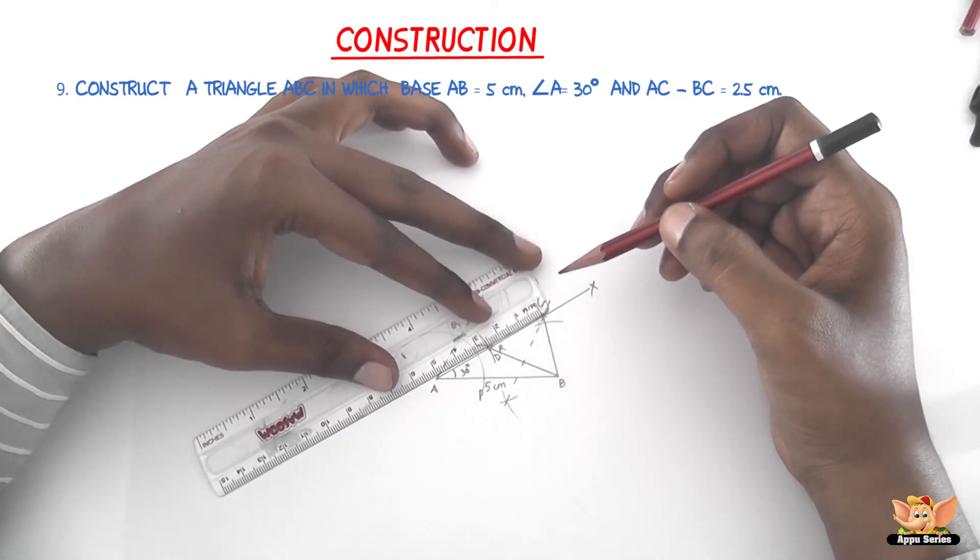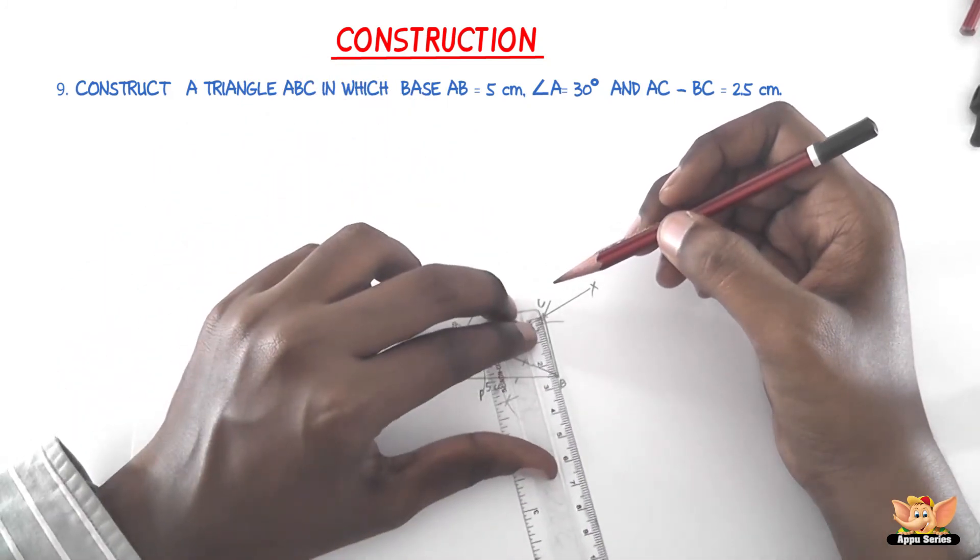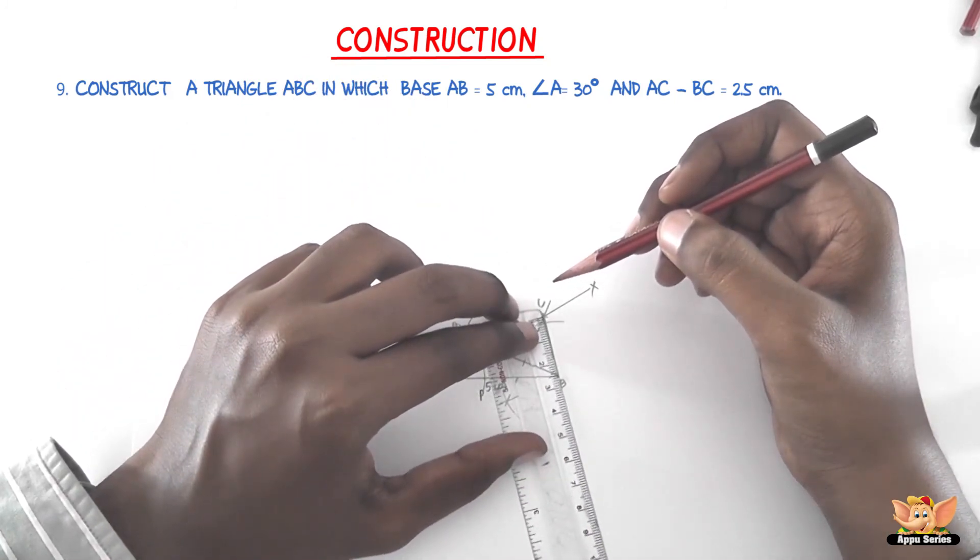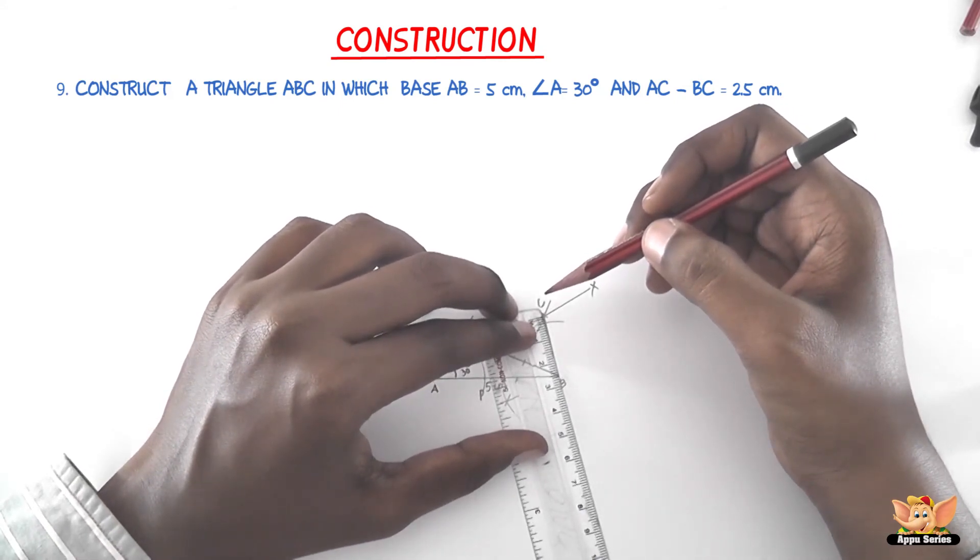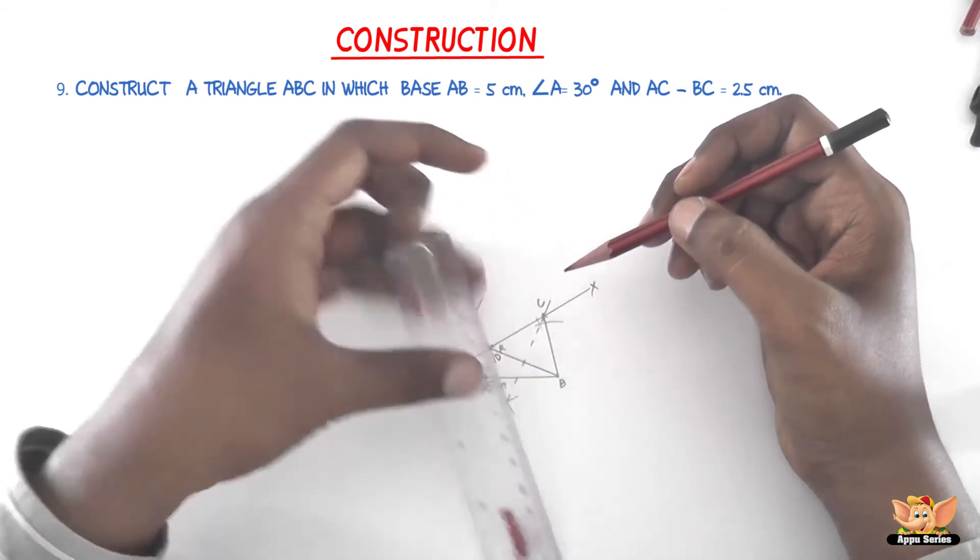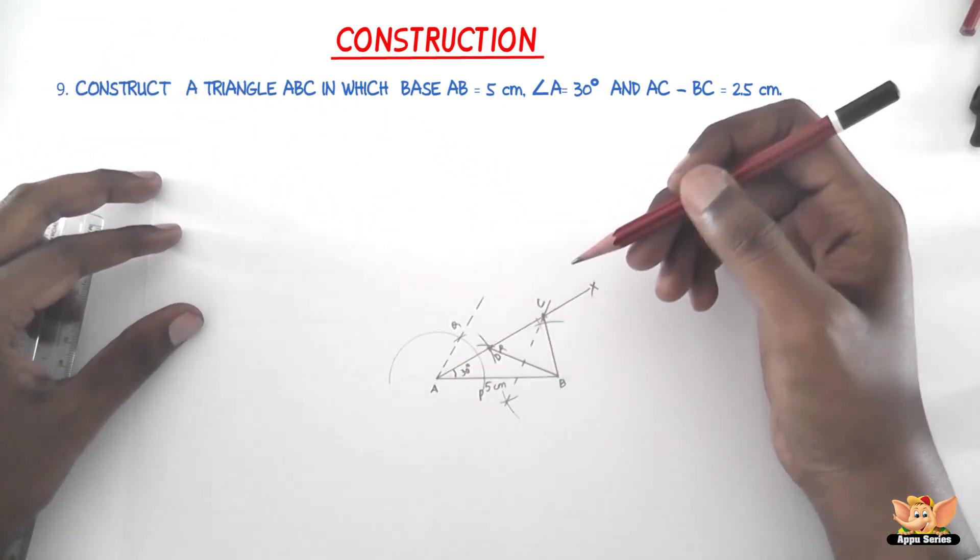Now AC measures around 5.1 cm and BC measures 2.6 cm. So 5.1 minus 2.6 equals 2.5 cm. So therefore ABC is the triangle that we needed.